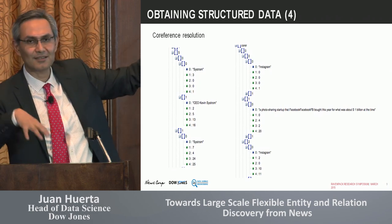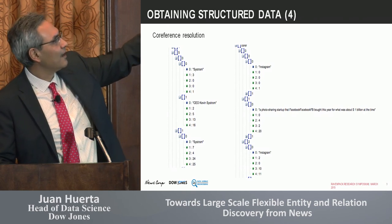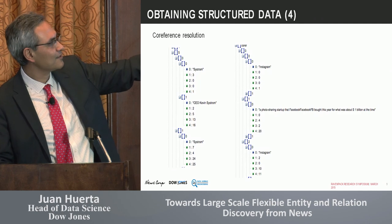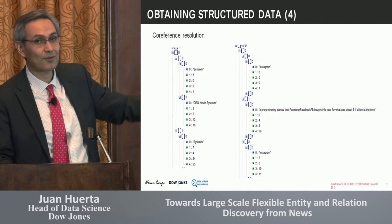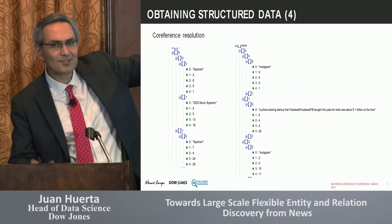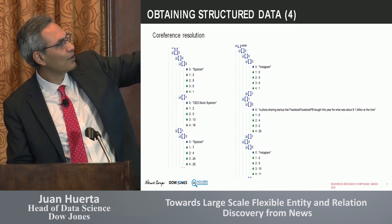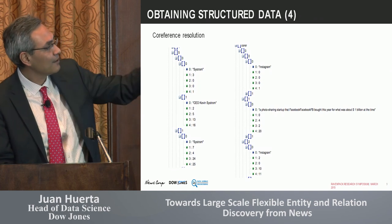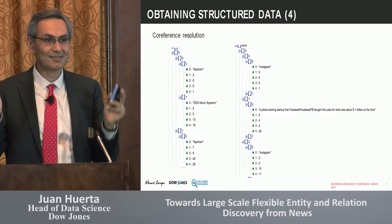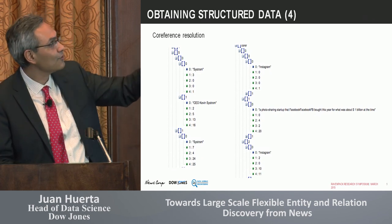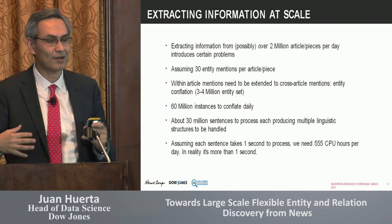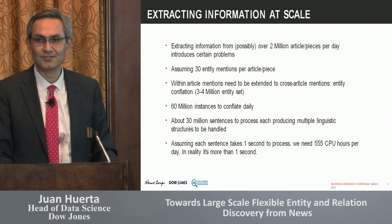The next step is coreference resolution — putting together in buckets the pronouns and instances that refer to the same entity. Here is a cut of the JSON after entity coreference resolution. You can see that 'Systrom' in the zeroth sentence, 'CEO Kevin Systrom' in the second sentence, and 'Systrom' in the seventh sentence are all bundled together into the same entity: Kevin Systrom, CEO of Instagram. On the right, we can find Instagram — interestingly, the phrase 'a photo sharing startup that Facebook bought this year for one billion' also became an entity and came together with Instagram. So we resolve not only personal pronouns but also phrases that refer to and define Instagram. After coreference resolution, we have all dimensions and the structures associating entities to each other, so we can do some sort of aggregate summarization and present those hypotheses to analysts.